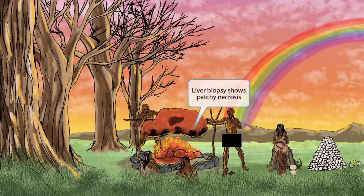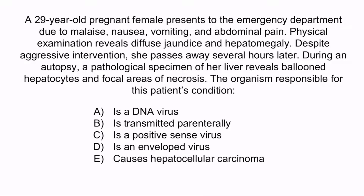Now that we've covered the image, let's review with a question. A 29-year-old pregnant female presents to the emergency department due to malaise, nausea, vomiting, and abdominal pain. Physical examination reveals diffuse jaundice and hepatomegaly. Despite aggressive intervention, she passes away several hours later. During autopsy, a pathological specimen of her liver reveals ballooned hepatocytes and focal areas of necrosis. The organism responsible for this patient's condition: A) is a DNA virus, B) is transmitted parenterally, C) is a positive sense virus, D) is an enveloped virus, or E) causes hepatocellular carcinoma.